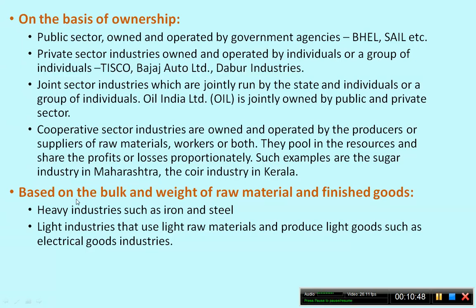Based on the bulk and weight of raw material and the finished goods, industries are classified into heavy industries — such as the iron and steel industry — and light industries that use light raw materials and produce light goods, such as the electrical goods industry.